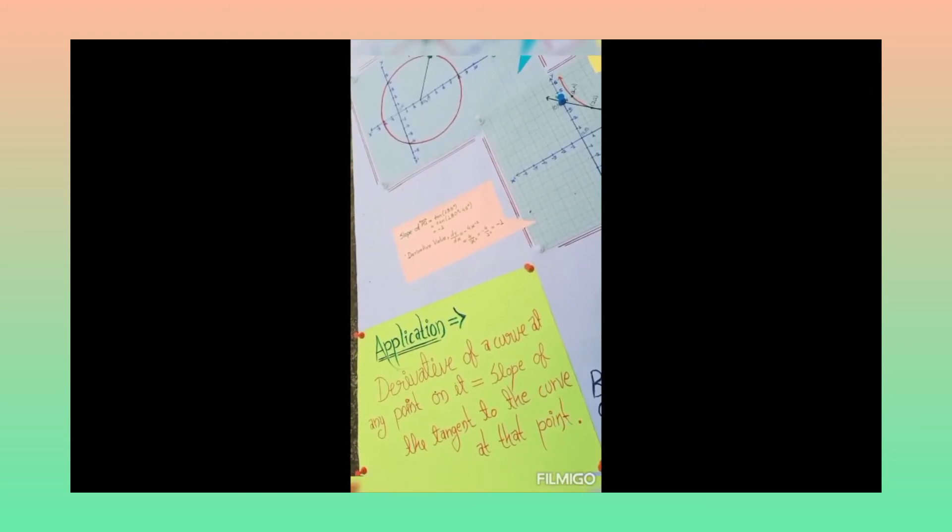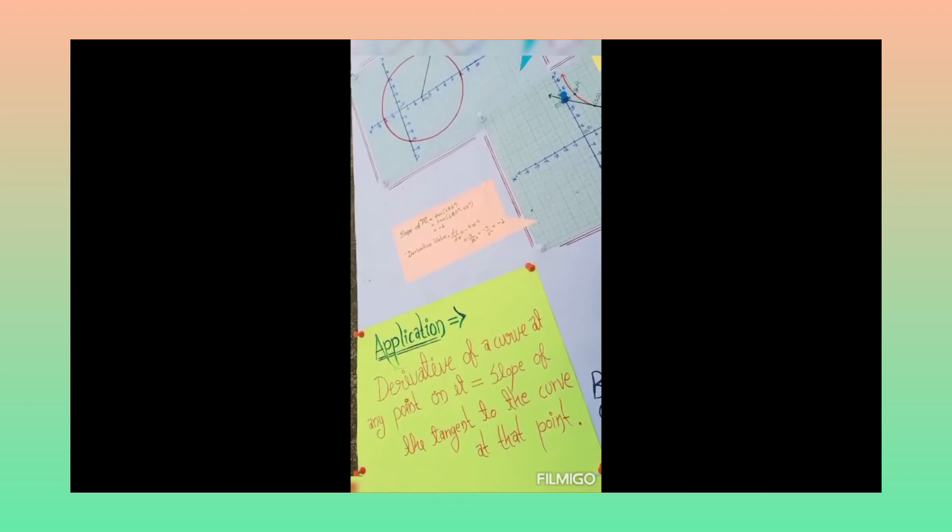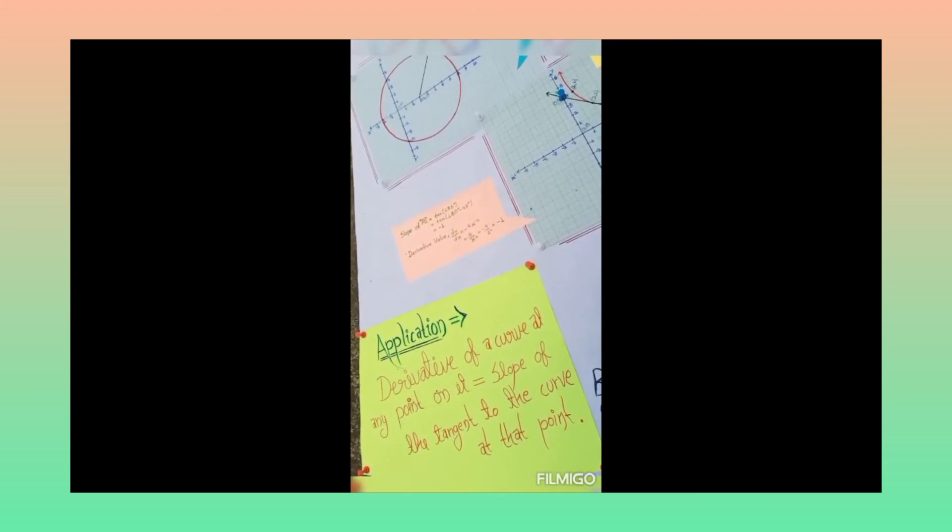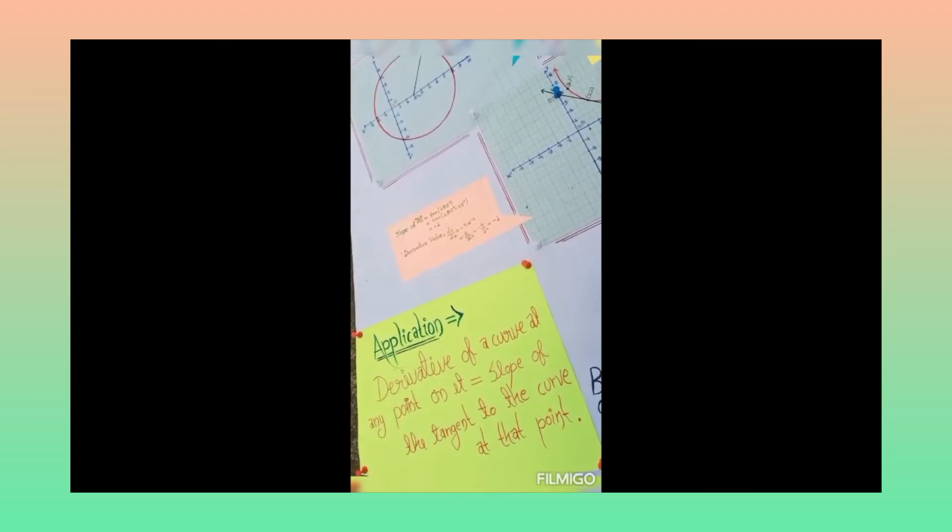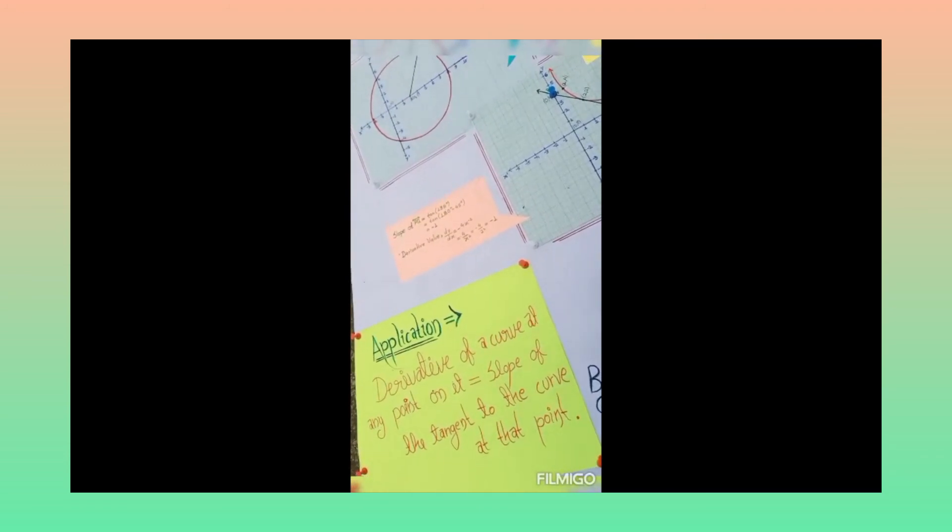So by seeing all activity, we conclude that derivative of a curve at any point on it is equal to slope of the tangent to the curve at that point. Thank you.